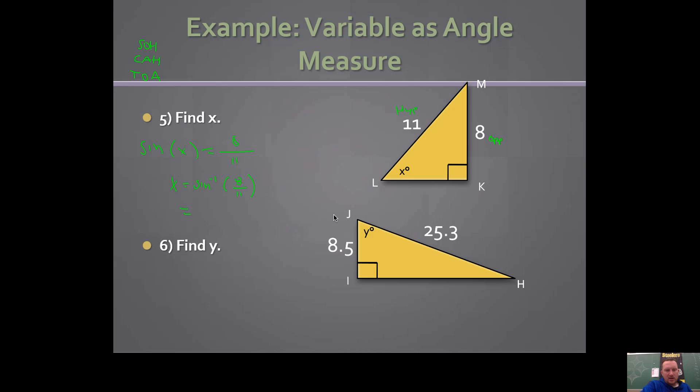Hit the second button on your calculator, and then hit the sine button. So you get inverse sine. 8 divided by 11 gives me 46.66 degrees.